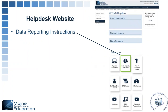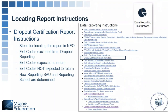Resources for today's report: the Data Reporting Instructions page is going to house your report instructions for dropout. On that page, you'll have the dropout report about halfway down. This is going to go through steps for locating the report in NEO, exiting student codes, how those exits map to the dropout report, and how reporting for an SAU and reporting school are determined.